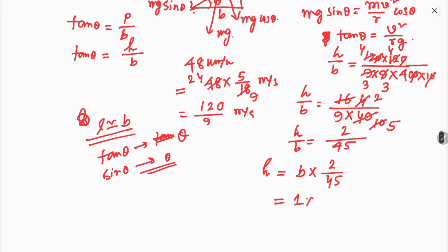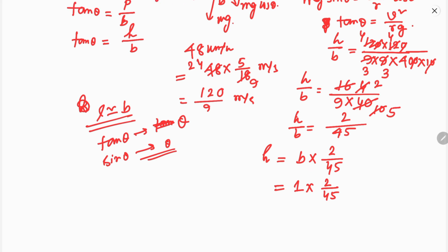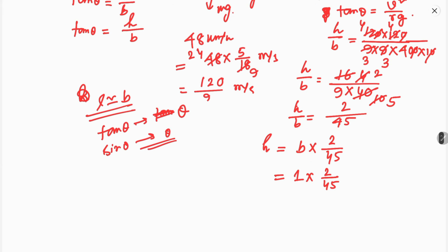With b equal to 1 meter, h equals 1 times 2 by 45, which gives h approximately equal to 0.0444, so h equals 0.045 meters.